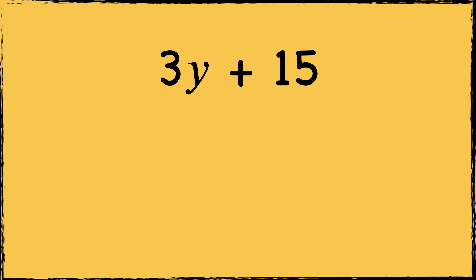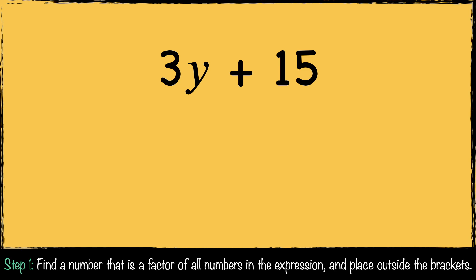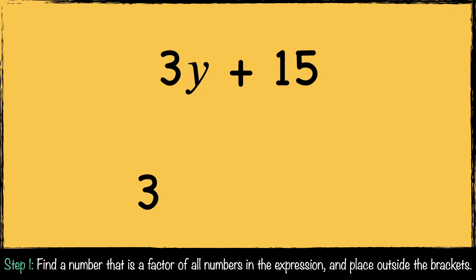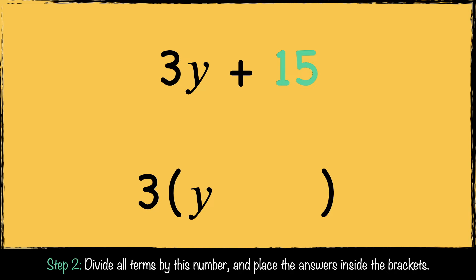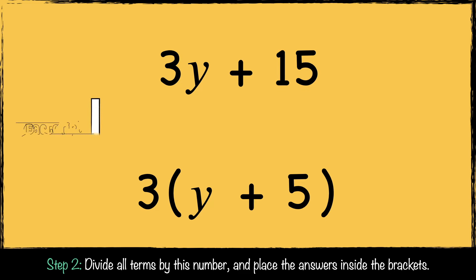Here's the first example: 3y + 15. We need to find a factor of the terms in this expression. 3 is a factor of both 3 and 15, so we put 3 in front of the brackets. Now we divide our terms by 3: 3y divided by 3 is y, and 15 divided by 3 is 5. So this expression can be factorized to 3(y + 5).